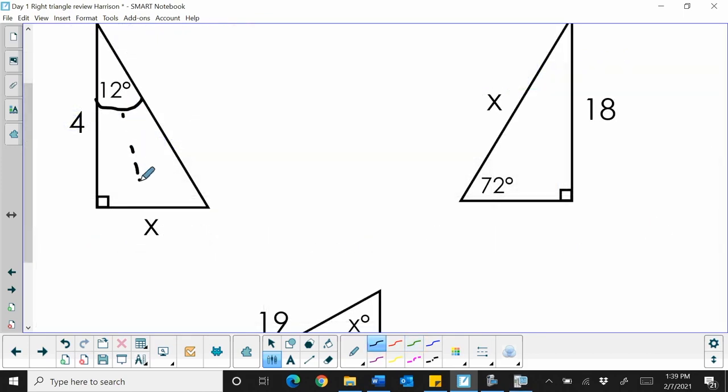Well, let's identify. This one is opposite. This is another leg, so it's adjacent. Which trig function uses opposite adjacent? And that is tangent. So tangent of the angle, which is 12, is equal to x over 4.